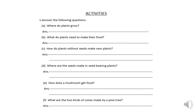Part F is: what are the two kinds of cones made by a pine tree? Pine trees have two kinds of cones. There are pollen cones, which contain pollen, and there are seed cones, which make seeds. So a pine tree has two kinds of cones: pollen cones and seed cones.